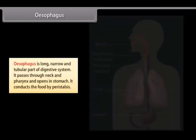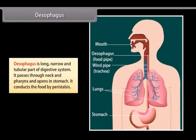Esophagus is a long, narrow and tubular part of the digestive system. It passes through the neck and thorax and opens into the stomach. It conducts the food by peristalsis.